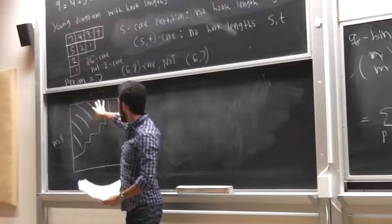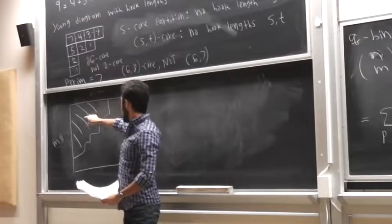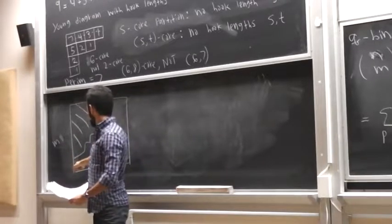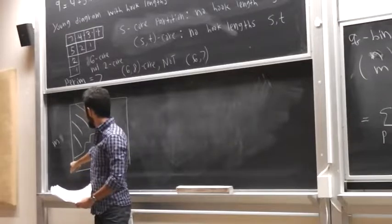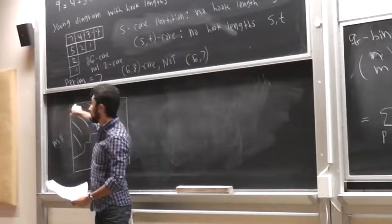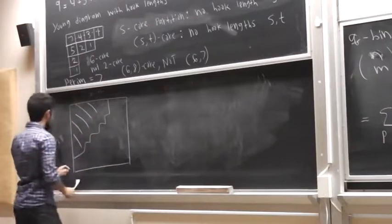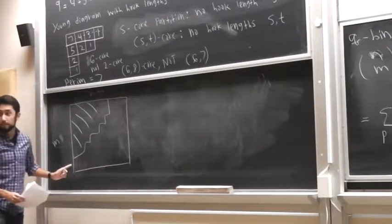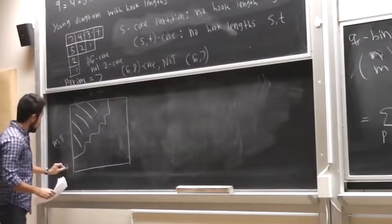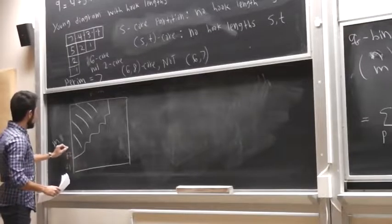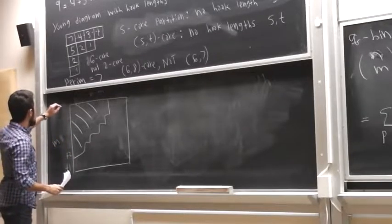So what we're going to do is we're going to take a partition like this, and we're going to add to each part, starting at the bottom row, we're going to add one, two, three, four, and so on to the parts. So we're going to take the bottom row, which might be empty, but that's okay, and we're going to add one, then two, and so on. And to the top row, we add m.